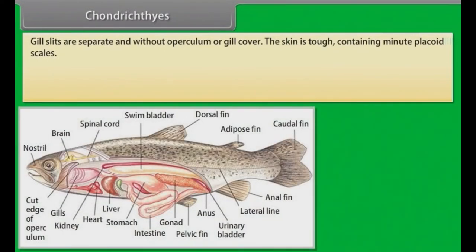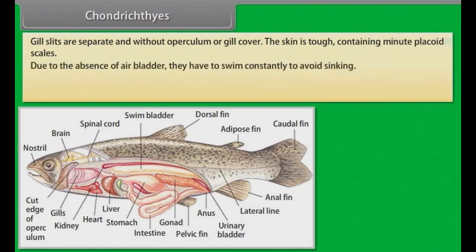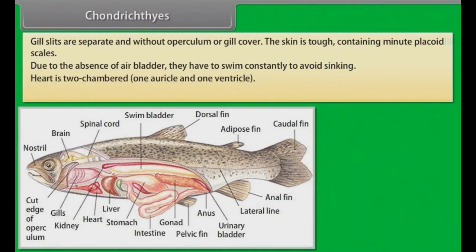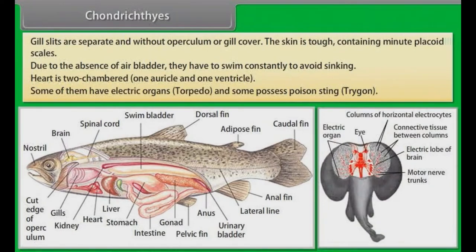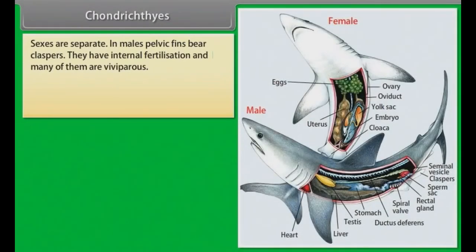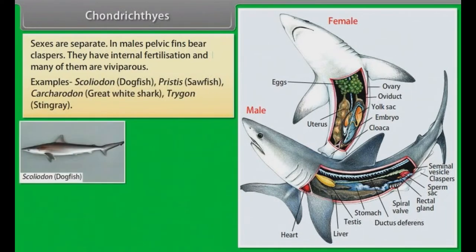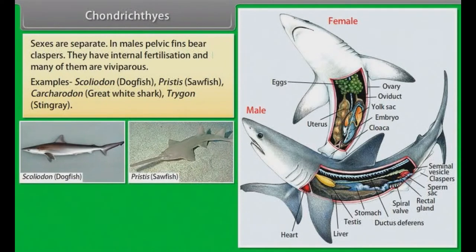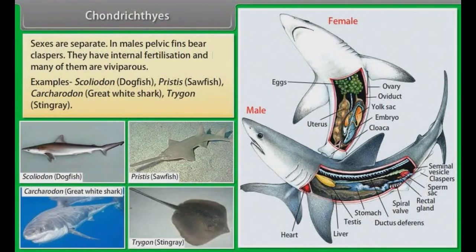Gill slits are separate and without operculum or gill cover. Their skin is tough, containing minute placoid scales. Due to the absence of an air bladder, they have to swim constantly to avoid sinking. Heart is two-chambered — one auricle and one ventricle. Some have electric organs (torpedo) and some possess poison sting (trigon). Sexes are separate; in males, pelvic fins bear claspers. They have internal fertilization and many are viviparous. Examples: Scoliodon (Dogfish), Pristis (Sawfish), Carcharodon (Great White Shark), Trigon (Stingray).